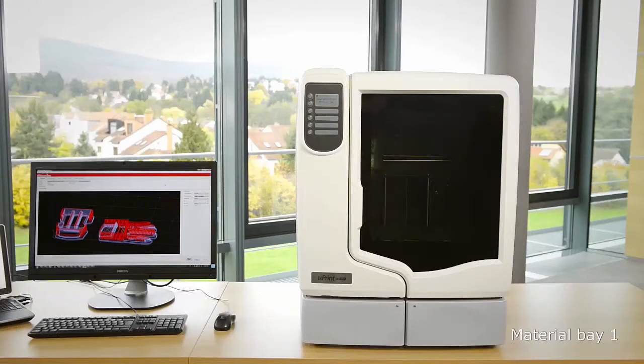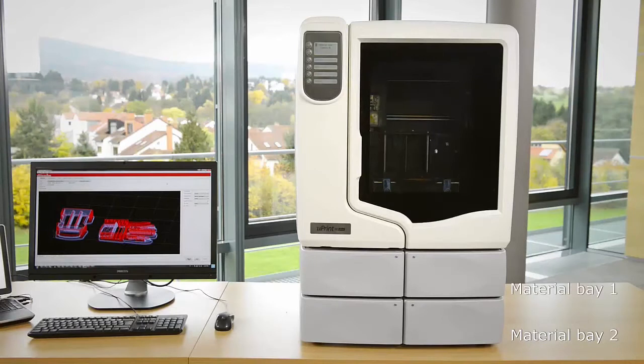The Uprint comes standard with one tray made up of two loading bays, one for the model material and the second for the soluble support material. There is an option for a second tray which effectively doubles that capacity, and the second tray will auto-switch ensuring no interruption in the printing process.